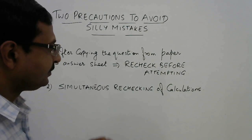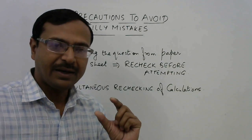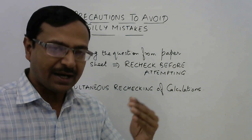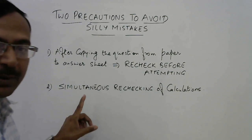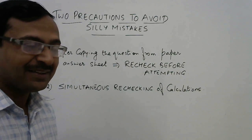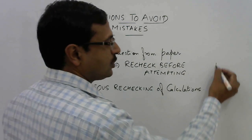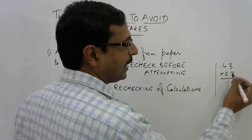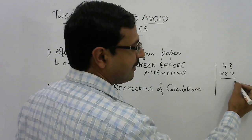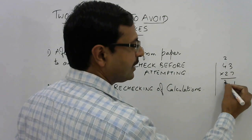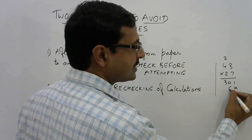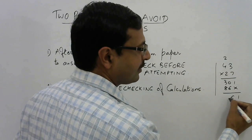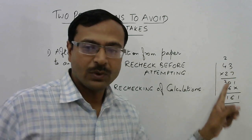Before writing the result of a calculation in the answer sheet, you have to perform simultaneous rechecking. That means suppose you have done 43 into 27 in rough work and you have found the answer: 7, 21, 1, 2 carry, 7, 28, 30, then cross, and 6, 8, and then you have carried out the calculation like this.